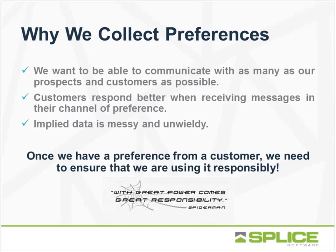So why do we collect preferences? The important thing to start with is that there is a difference between a permission and a preference. A permission is somebody who says yes, contact me, or no, do not contact me — they are giving you a permission as to whether or not you can contact them at all. A preference is an additional piece added onto a permission as to how, where, and when somebody would like you to contact them. Primarily today we're talking about our retail implementations and VIP programs — talking to people about an event, loyalty, or how they've been a valued customer, versus something more transactional like an account notification.